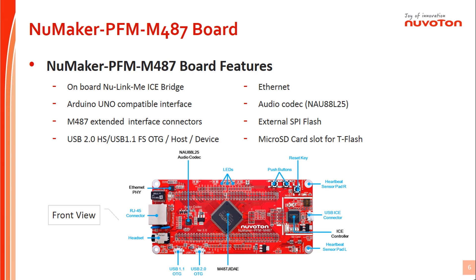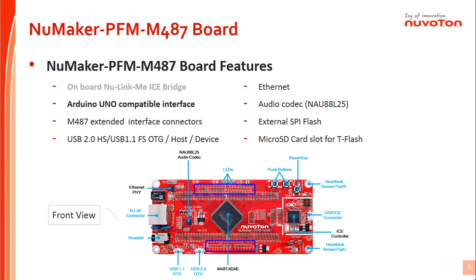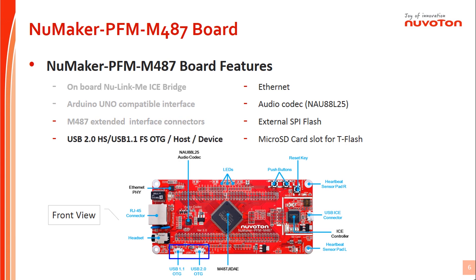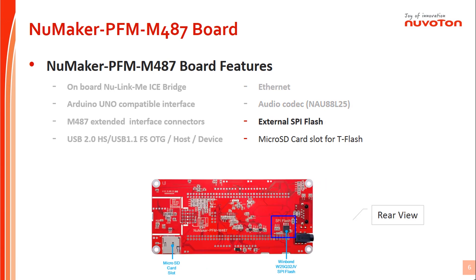There are many features and connectors from the front view: onboard NuLink-Me ICE Bridge for drag-and-drop programming, Arduino UNO compatible interface, N487 extended interface connectors, USB 2.0 HS, USB 1.1 FS OTG host/device, Ethernet for network applications, and an audio codec with microphone input and headphone output. From the rear side of the NuMaker PFM N487 board, there is an external SPI flash which can be regarded as a ROM module, and a micro SD card slot for T-Flash.